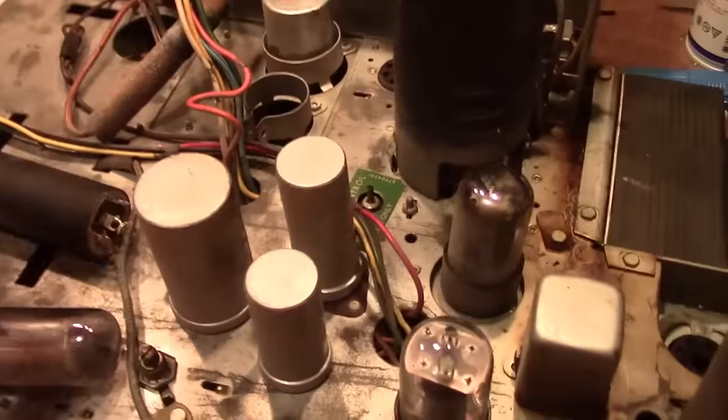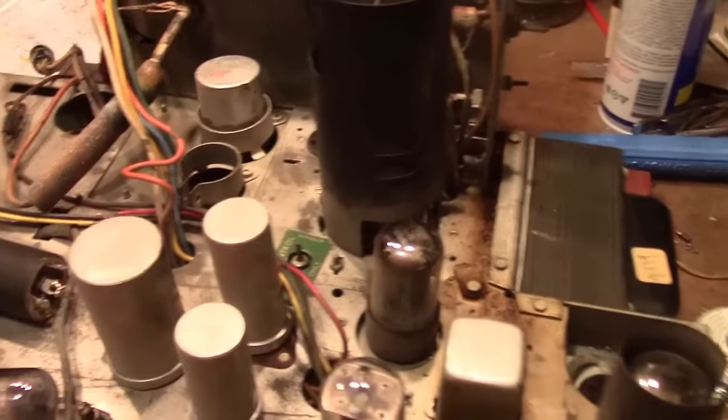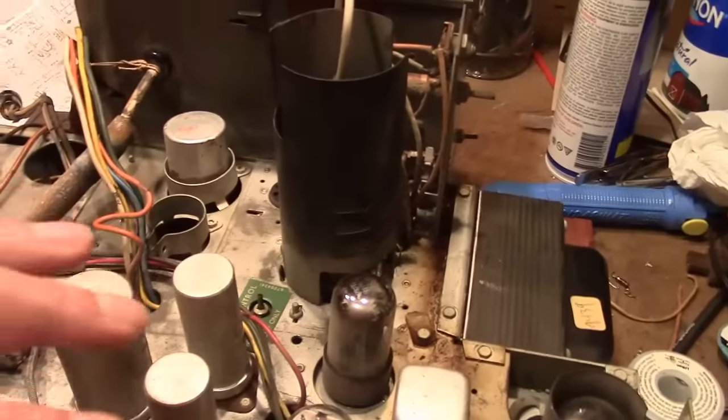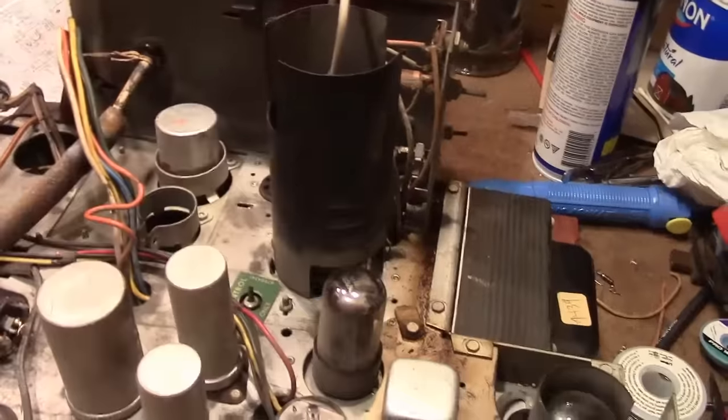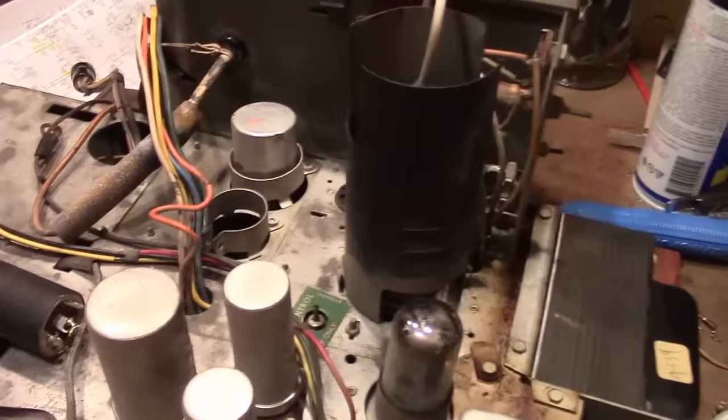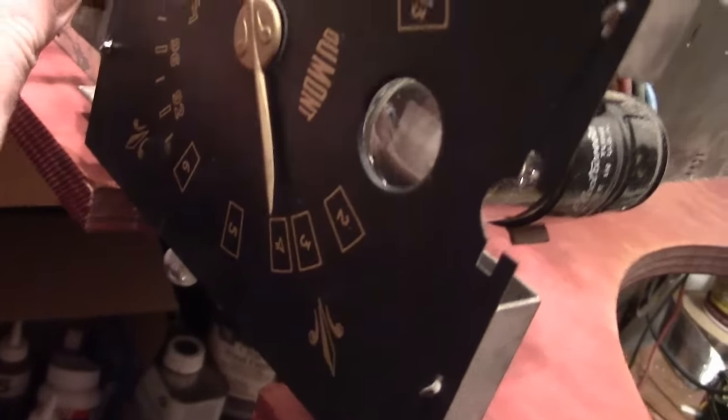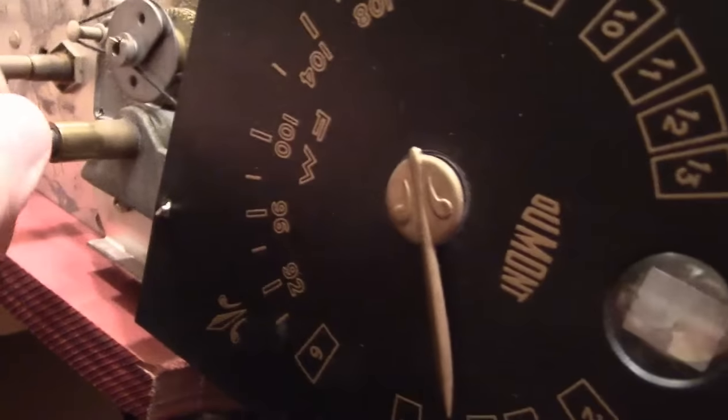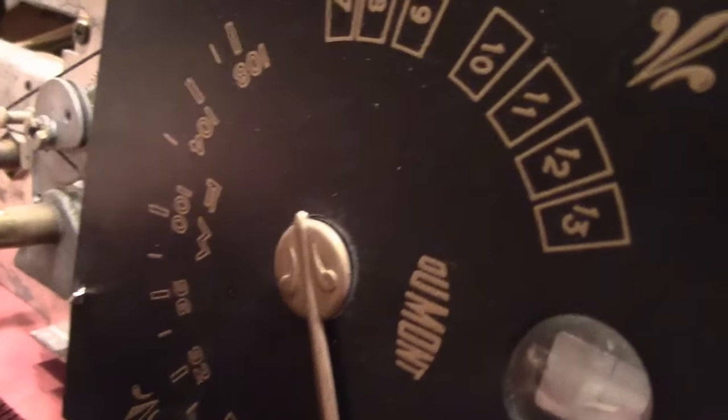Now once I get these replaced, what I propose to do is pop out the horizontal output tube and maybe the vertical output tube and try powering this up. What that will do is it won't matter if I have the yoke in there because the circuits that drive it will be disconnected. So we're not going to get any picture or high voltage, but hopefully we'll get some sound. This set does have a continuous tuner and it not only does TV, but it does the FM band. So with the TV stuff disabled, if all is well, we should be able to tune in some FM radio stations.